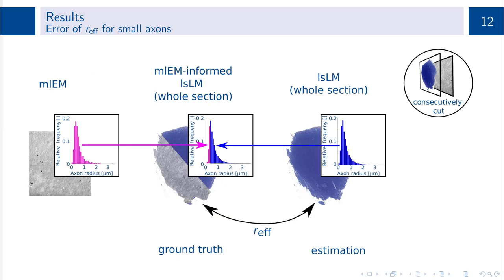For the effective radius, we evaluated the influence of small axons below the LSLM resolution limit of 0.3 microns by comparing the LSLM-based estimation on whole sections with EM-informed references. To generate these, we removed small axons from the LSLM-based axon radii ensembles and added small axons from the EM-based axon radii ensembles according to the ratio of small and larger axons observed in EM.